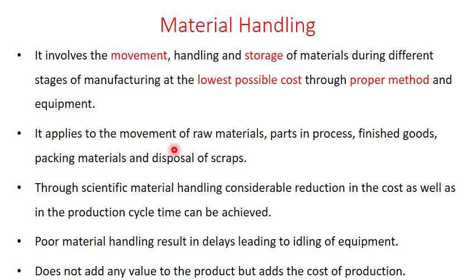Through scientific material handling — for example, automation — considerable reduction in cost as well as production cycle time can be achieved. On the other hand, poor material handling results in delays, increased idle time of equipment, increasing cycle time, which ultimately increases the cost of production, and may lead to dissatisfying customers through delays.